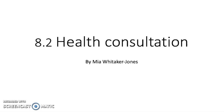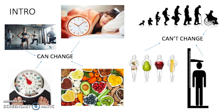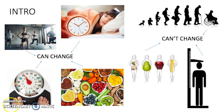8.2 Health Consultation. There are many different things you are born with that you can't change, such as your age, your height and your body shape or structure. But there are some things which can be changed to make the body healthier, such as your fitness, your weight, the amount of sleep you get per night, your stress levels and your diet.